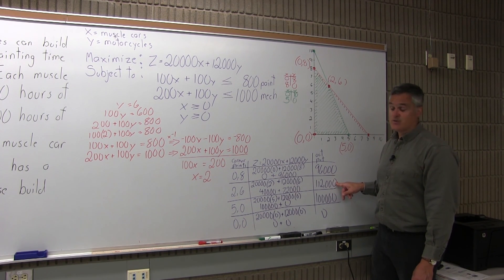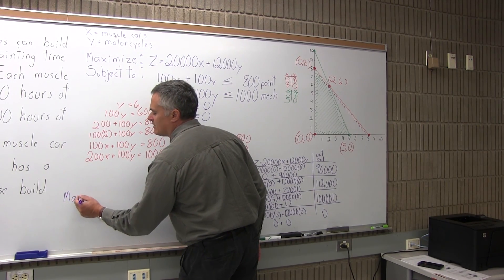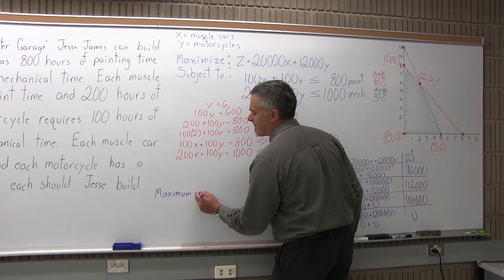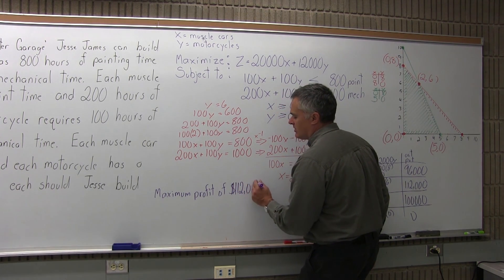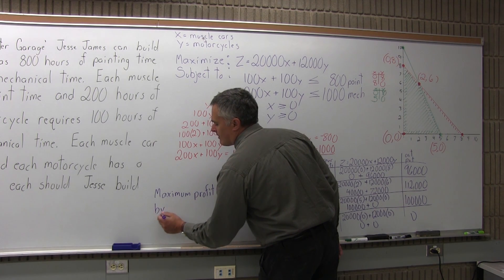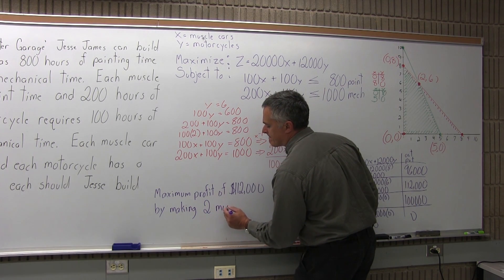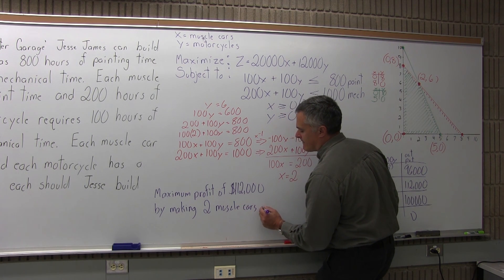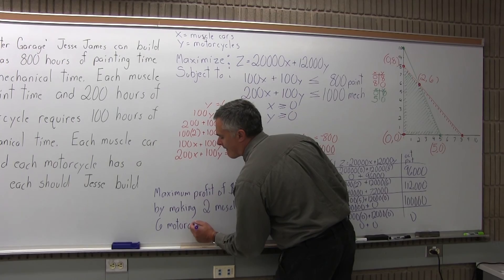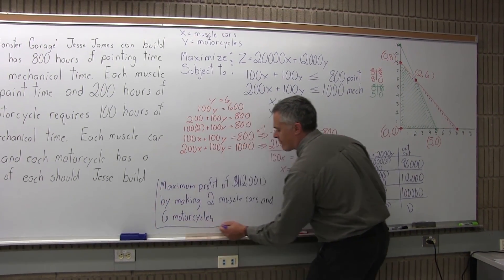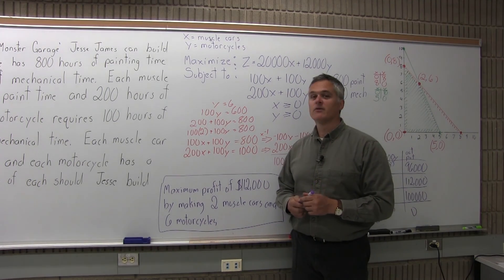The problem says maximize, so the best bet is $112,000. To state the solution: you will have a maximum profit of $112,000 by making 2 muscle cars and 6 motorcycles. You could arrive at this through trial and error, but using this method you get it right on the first try.